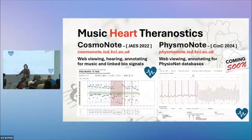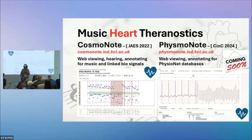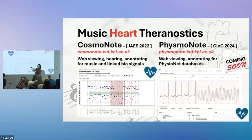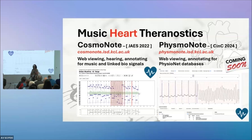We have built software, freely available, that allows you to see music information in different layers and the concurrent physiological information of the player as well as the listener during the music. Because we can do it for music at 44.1 kilohertz, we can do it for physiological signals at a much lower frame rate. After Cosmonote, we built Physmonote, which allows you to see all the databases of PhysioNet — databases of complex physiological signals.